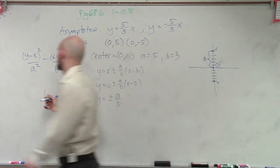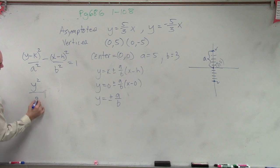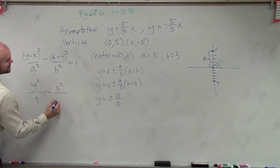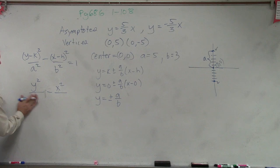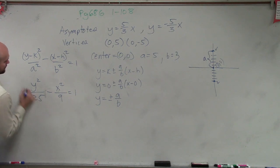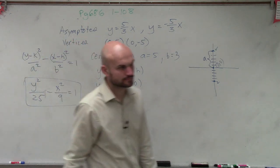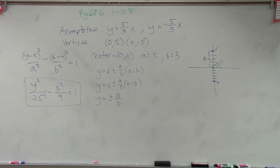y squared over... a squared is 25... minus x squared over b squared, 9. And there you go.